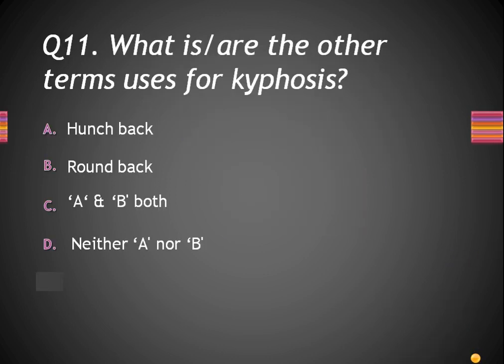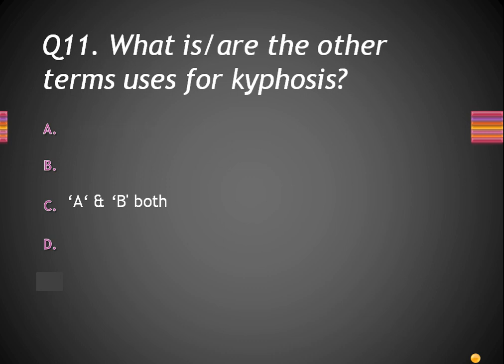Question number 11: What is or are the other terms used for kyphosis? Option A, hunchback; B, roundback; C, A and B both; and option D, neither A nor B. You have to tell the other names for kyphosis. As you know, kyphosis is the upper forward bend of the spinal cord. The right answer is C — A and B both. It means hunchback and roundback are both terms used for kyphosis.